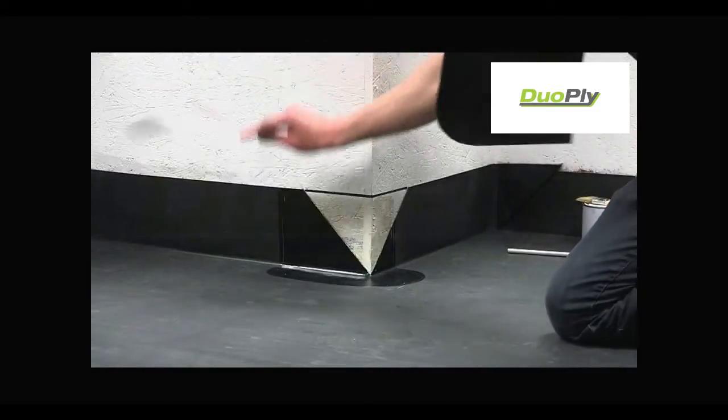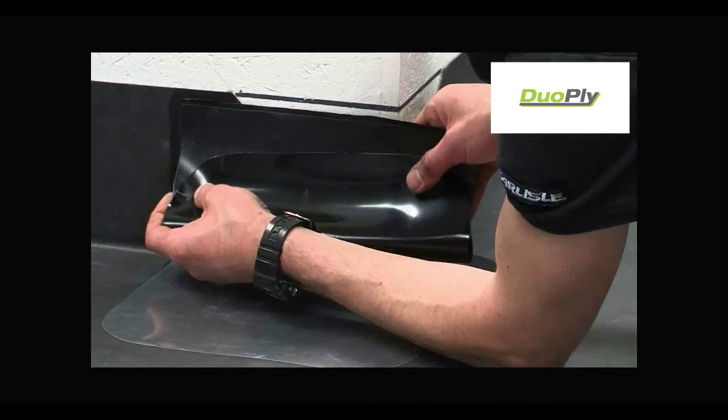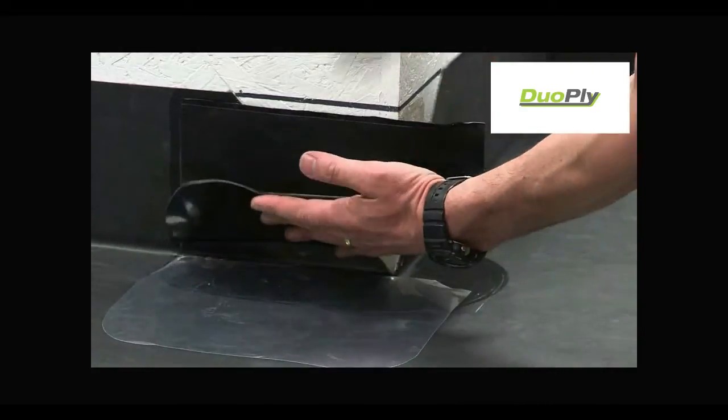When the primer is ready, remove the cellophane, using it to prevent the tape bonding to the deck whilst working on the upstand, and apply the pressure-sensitive tape.